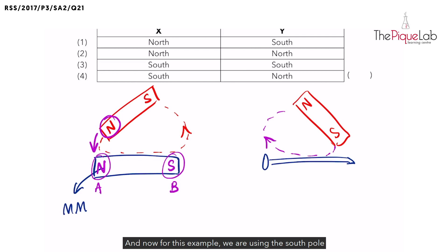And now, for this example, we are using the South Pole to stamp this part of the nail first. So this part will be the South. And therefore, the other side will be the North. Now, let's get back to the question.